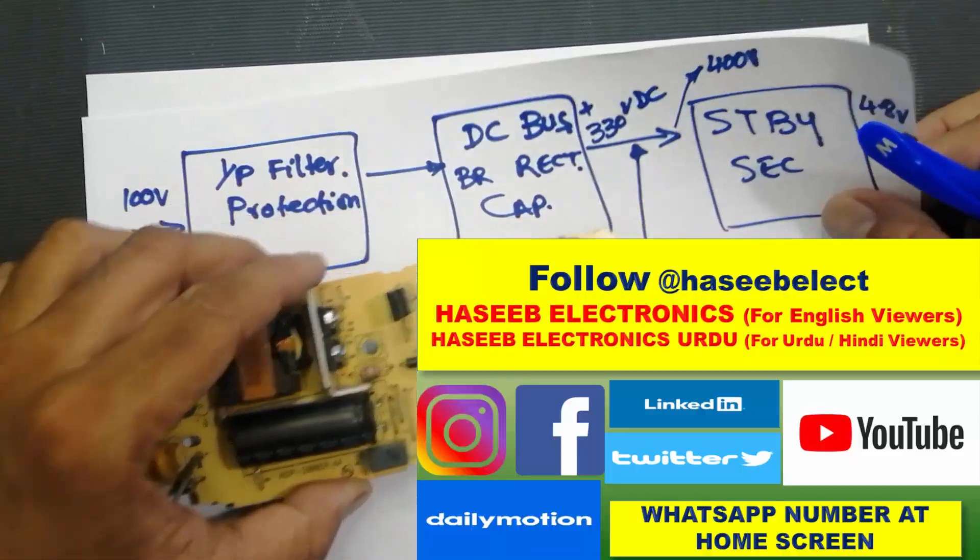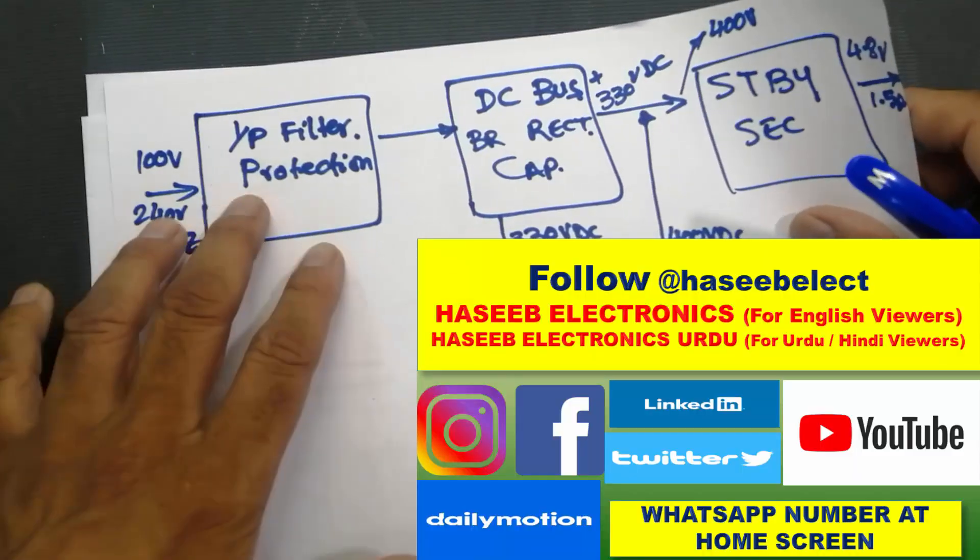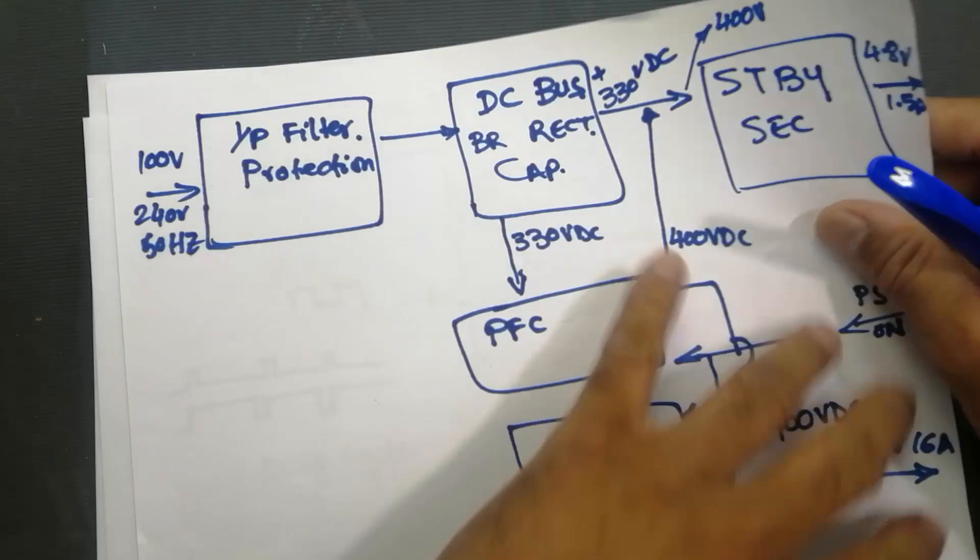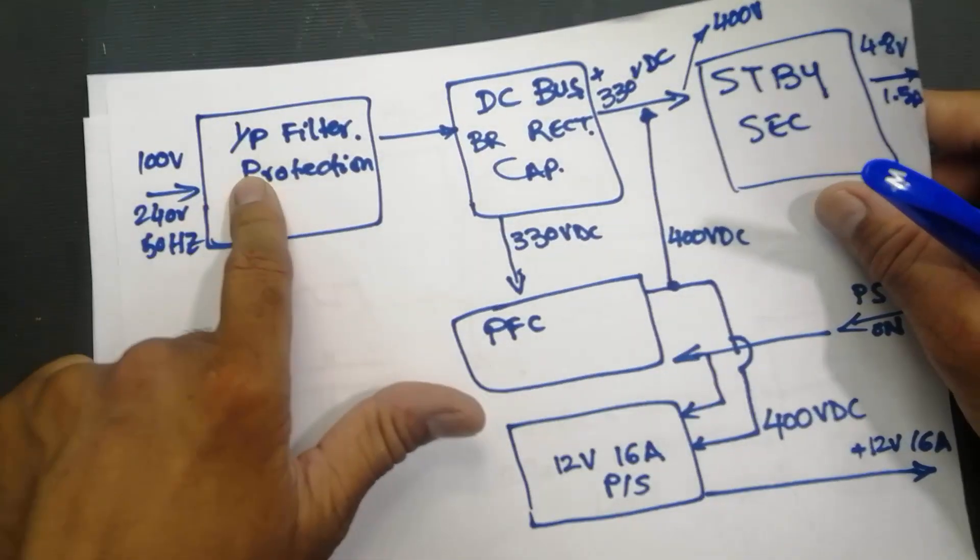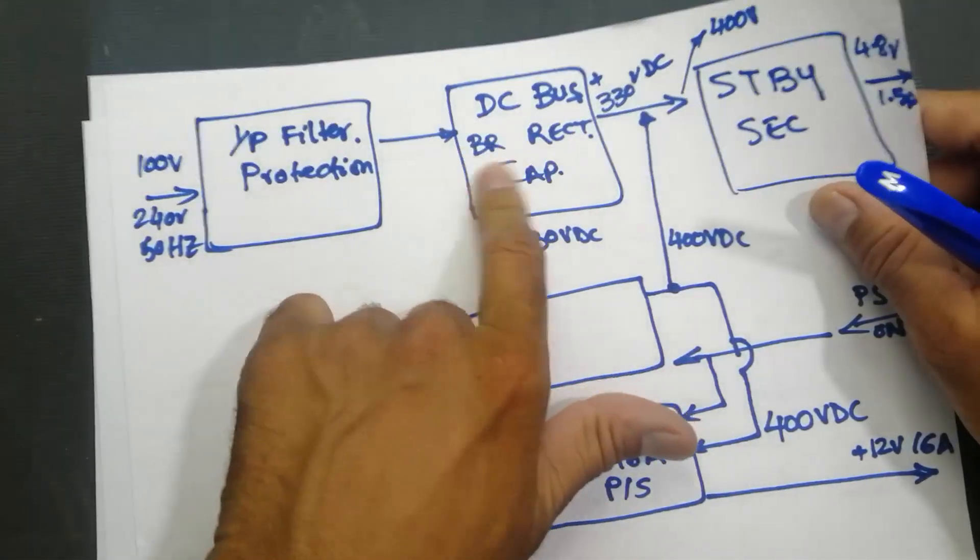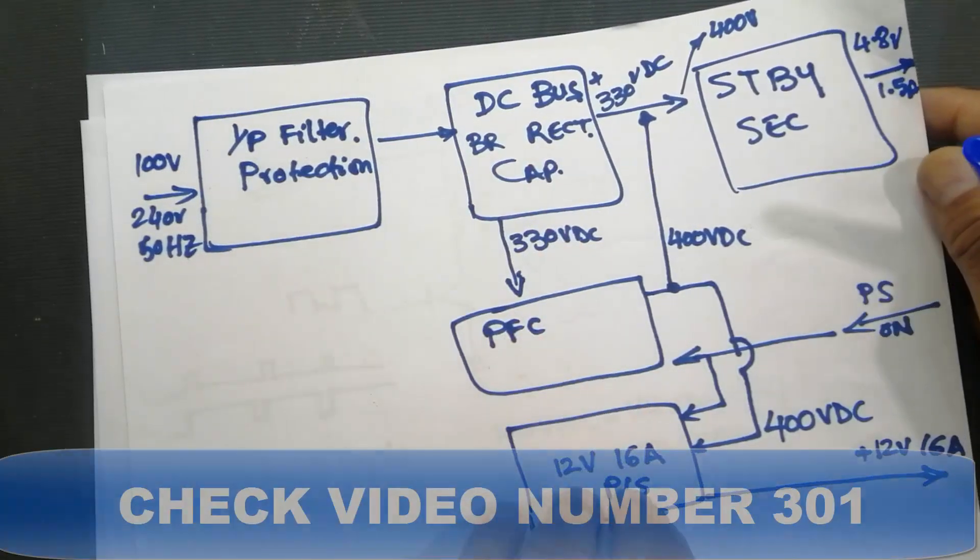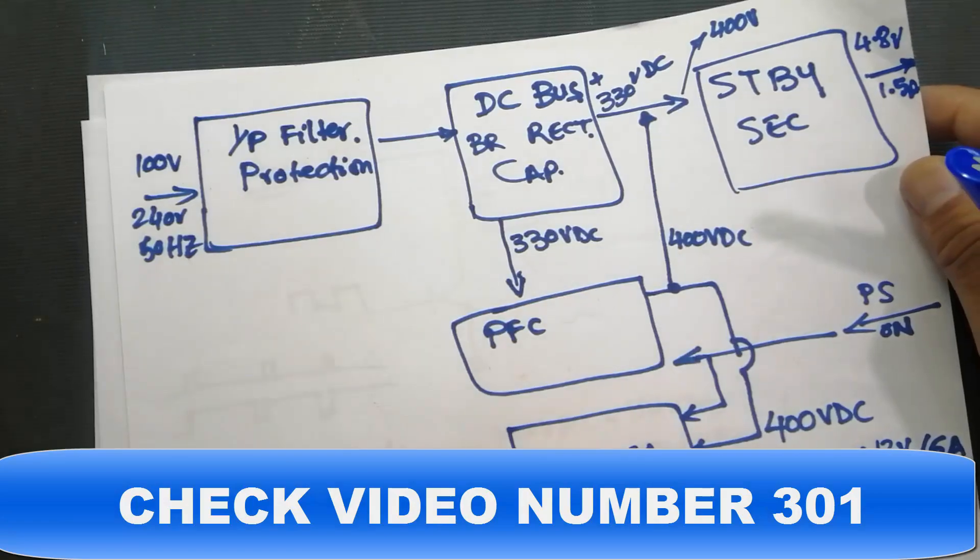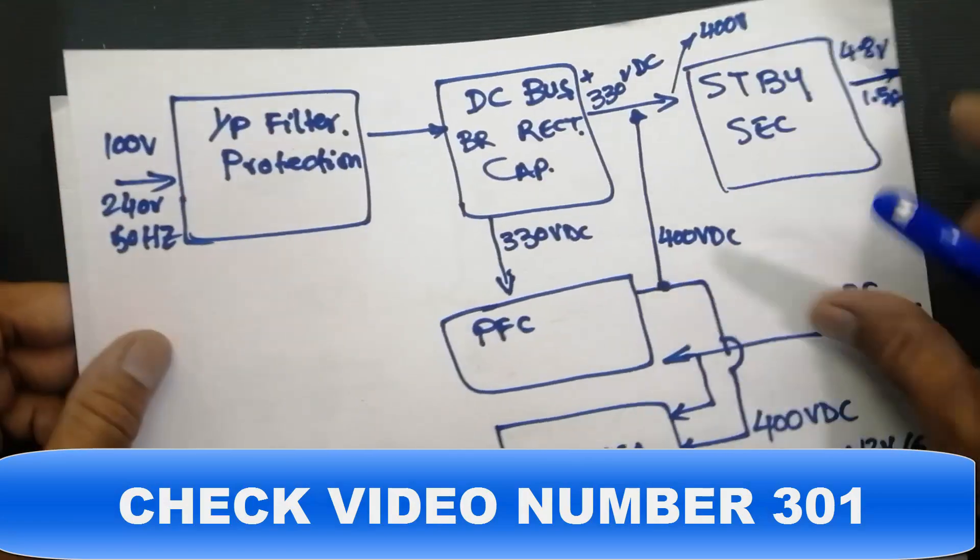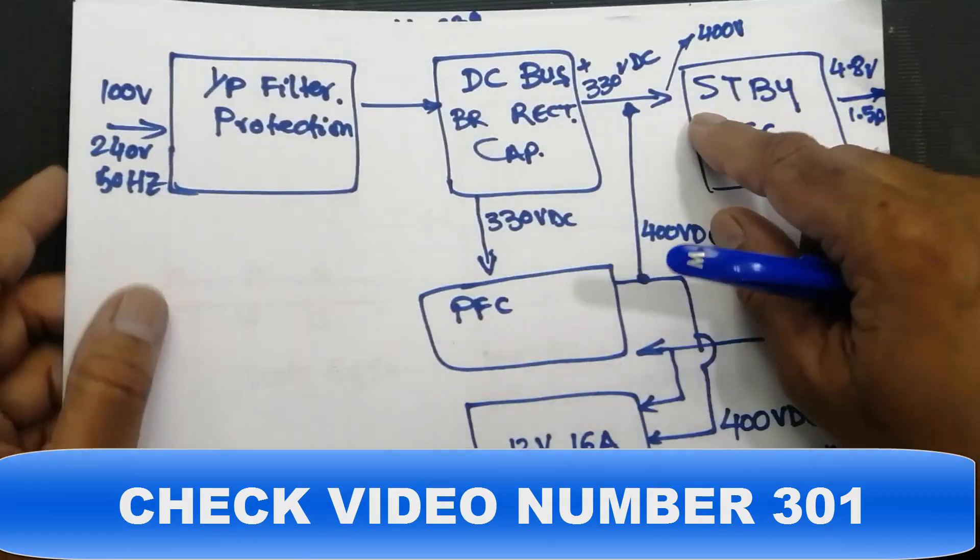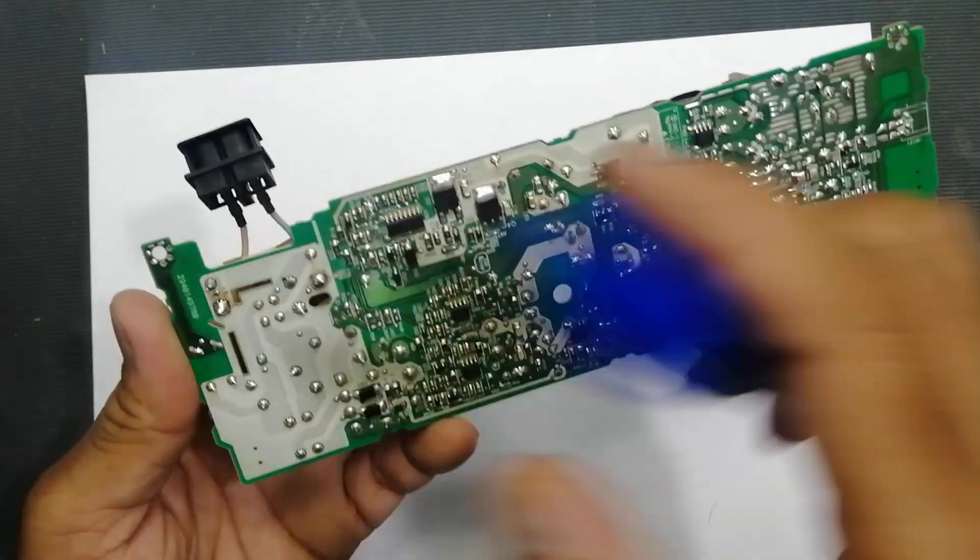Today we will discuss as part 2 of this setup, the input filter protection circuit and DC bus bridge rectifier circuit. Next we will discuss PFC and standby section and main power section. You can check this video, it is a general configuration of this board.